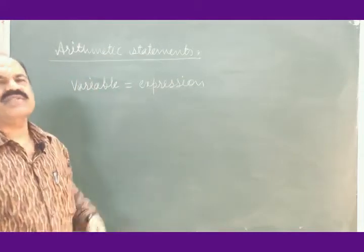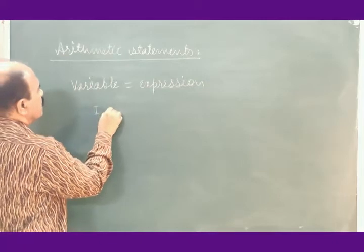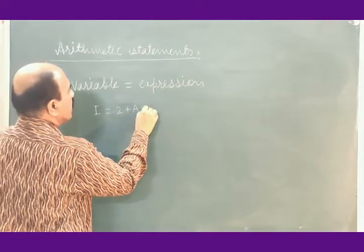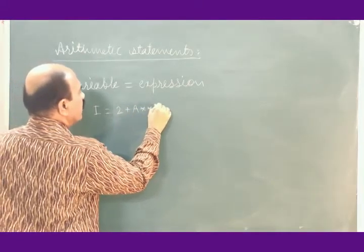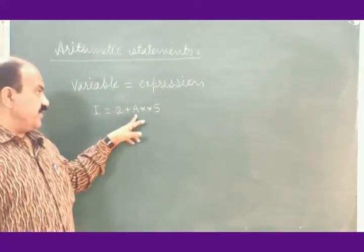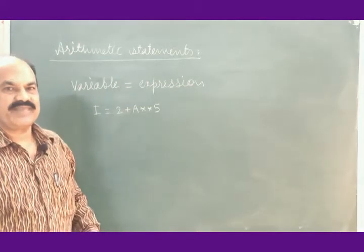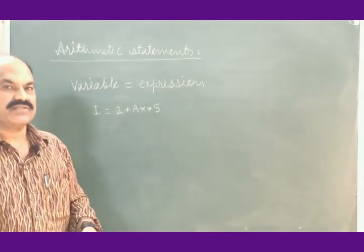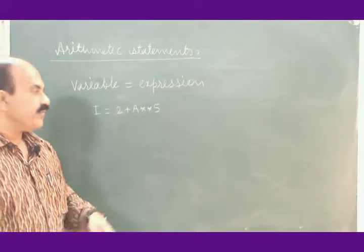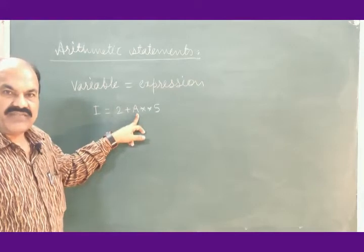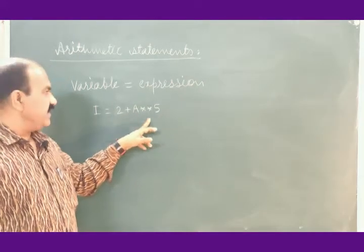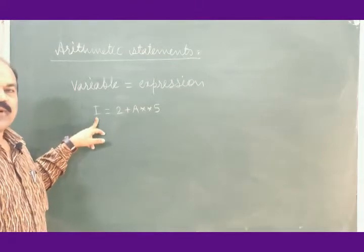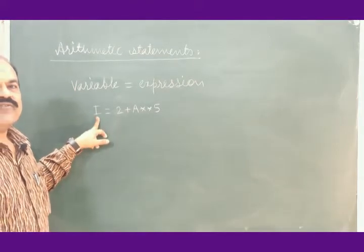We can have many examples for this. For example, I is equal to 2 plus A to the power 5. Of course, you have to provide the value of A in the program. When this statement is encountered by the control, it supplies the value of A, the calculation is done, and the result is stored in the memory location named variable I.